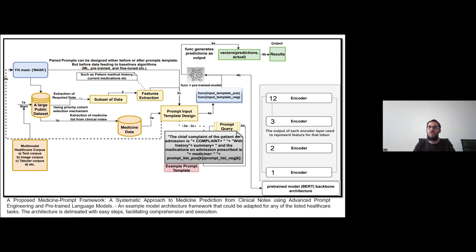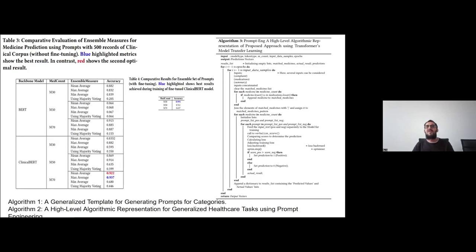And here, the model could be the pre-trained model and model is also fine-tuned model. We utilize both techniques. First, we use the pre-trained model and then we fine-tune the model based on our data. And we use the encoder architecture and we use BART and clinical BART models. The algorithm proposed is on the right side of the slide. The result which we get utilizing the BART and the clinical BART is comparative evaluation of the ensemble measures for the medicine prediction using the prompt with 500 records.